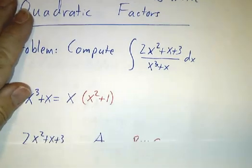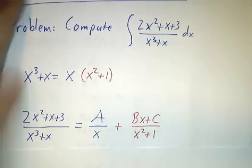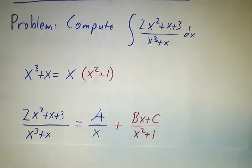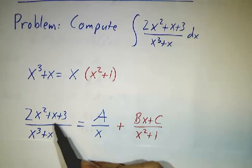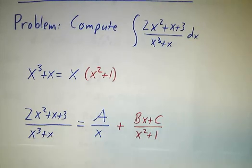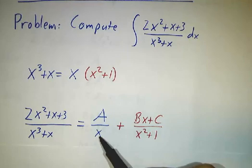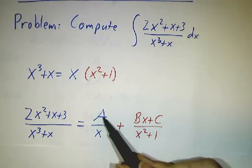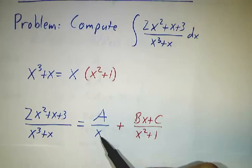So when we try to write it as a partial fraction, remember we're looking at fractions where the numerator has fewer powers of x than the denominator. And the rule is that every term, you have to allow the numerator to have everything up to one fewer power of x than the denominator.